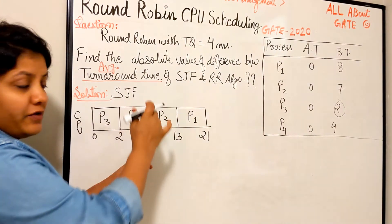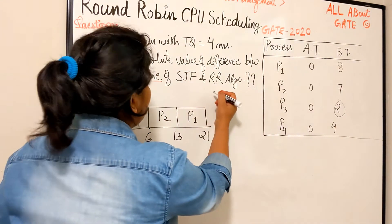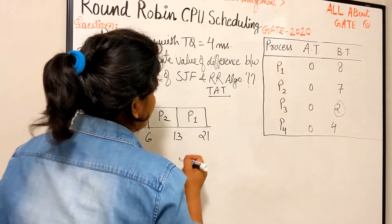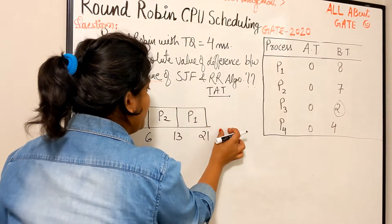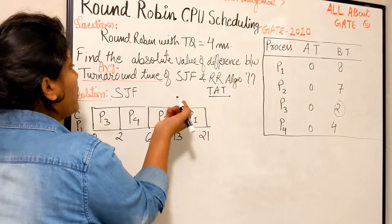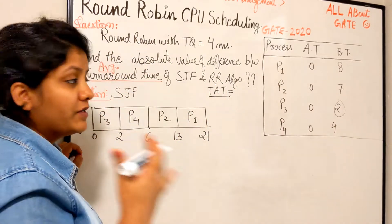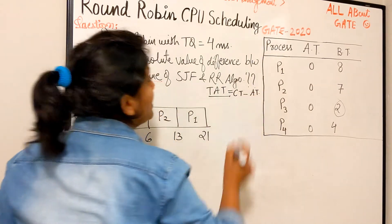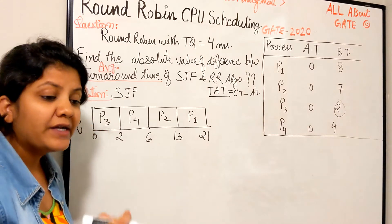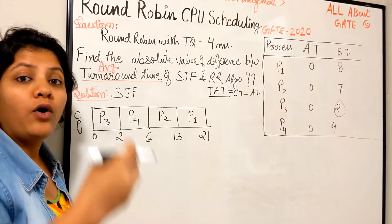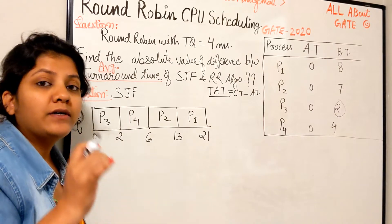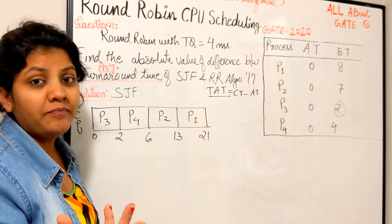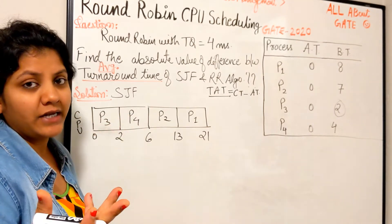Now the turnaround time for each process. I'll write for P1, P2, P3, P4. Let me recall what turnaround time is: completion time minus arrival time. The total time a process spends in the system, either running or waiting, is the turnaround time. We can find it by burst plus waiting time, or by completion time minus arrival time.